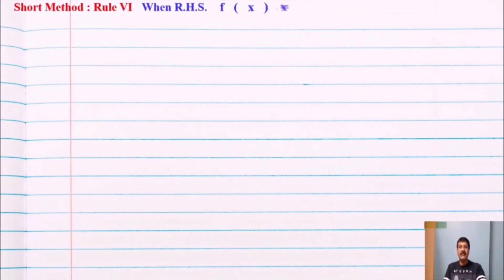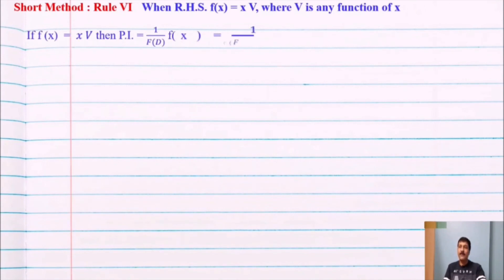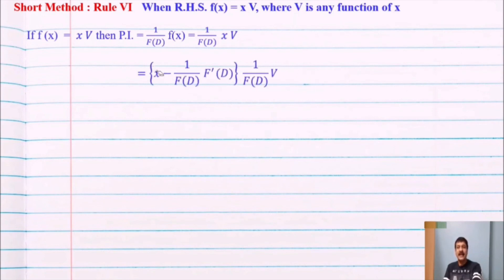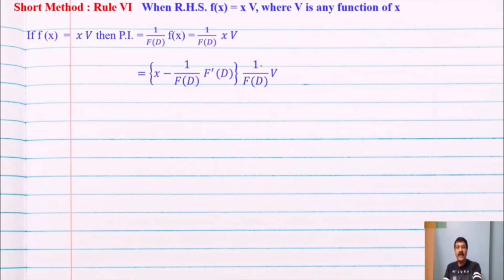Rule number six: when f(x) = x · v, where v is any function of x. If f(x) = x · v, then PI = 1/f(D) operating on x·v = [x − f'(D)/f(D)] · (1/f(D)) operating on v. The remaining part 1/f(D) operating on v can be solved using any of rules 1 through 4.